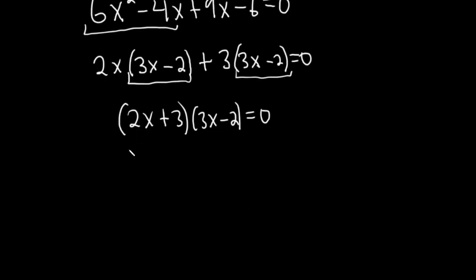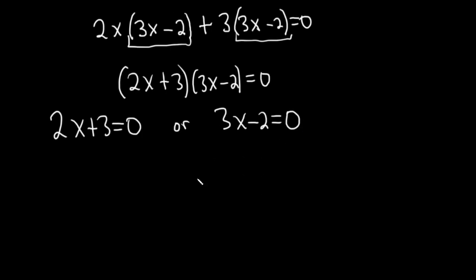Because we have a product and it's equal to 0, we can now set each factor equal to 0. So 2x plus 3 equals 0. Or 3x minus 2 equals 0. And solve this first equation pretty easily. We'll subtract 3. We get 2x equals negative 3. And we can divide by 2. We get x equals negative 3 over 2.